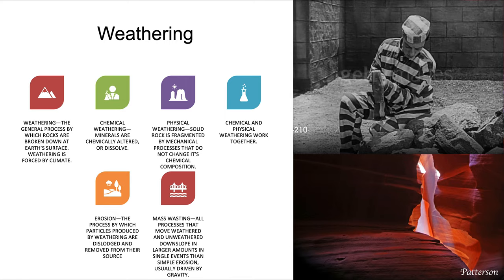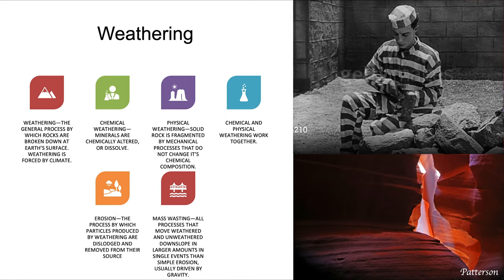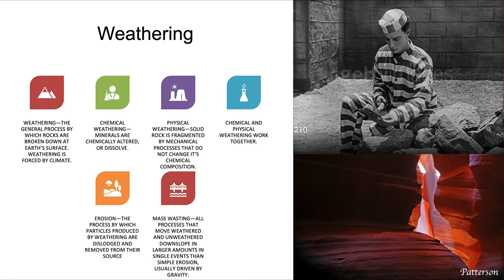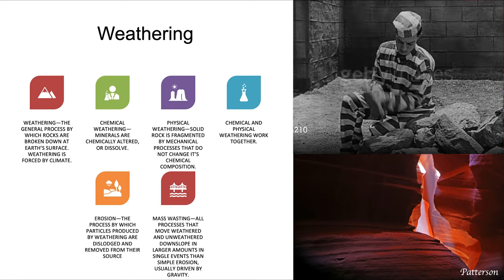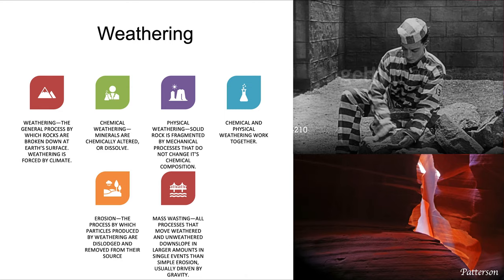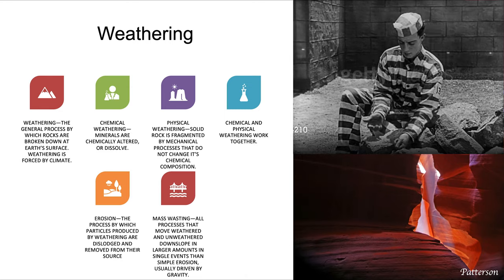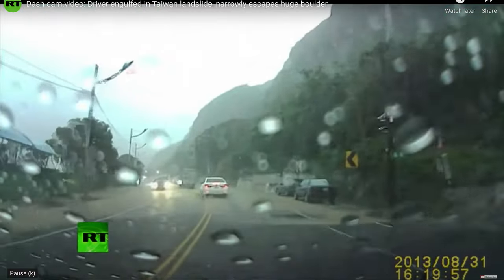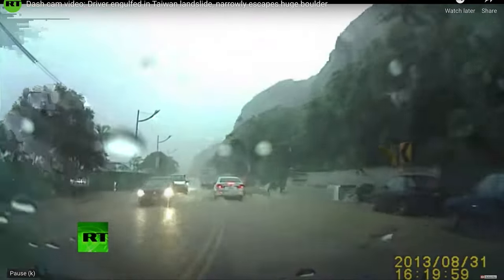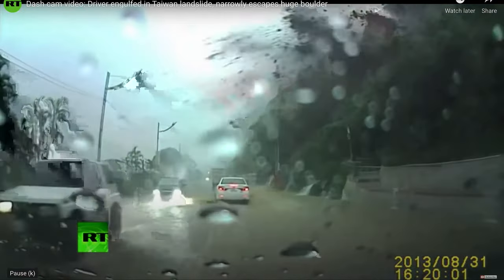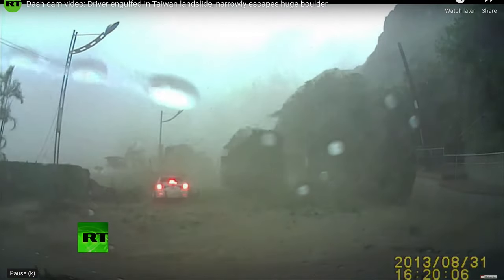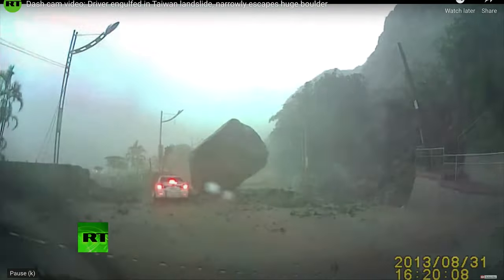Erosion is the process by which particles produced by weathering are dislodged and removed from their source. We break rock down and then need to move it — that's done by erosion. Mass wasting is a kind of erosion. It includes all processes that move weathered and unweathered material downslope in larger amounts and single events than simple erosion, usually accomplished largely by gravity.